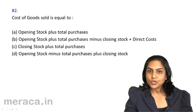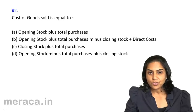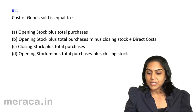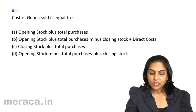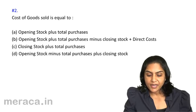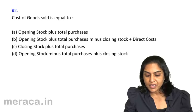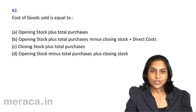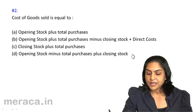Next question: Cost of goods sold is equal to — Option A: Opening stock plus total purchases. Option B: Opening stock plus total purchases minus closing stock plus direct costs. Option C: Closing stock plus total purchases. And Option D: Opening stock minus total purchases plus closing stock. Which should be the correct answer?